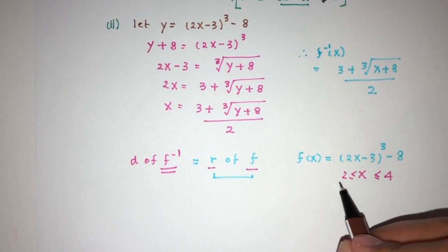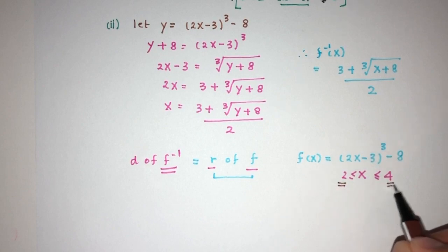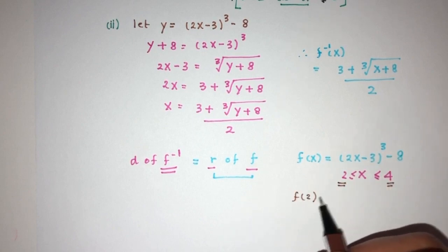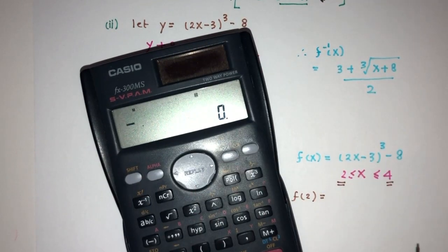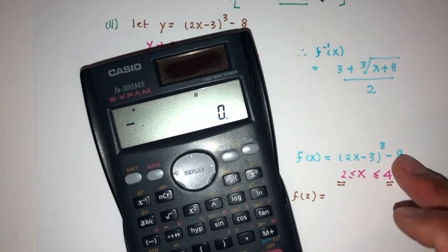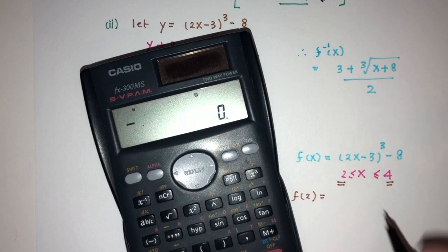So, f(2) will be what? 2 times 2 is 4 minus 3 is 1. 1 cubed minus 8 should be minus 7.